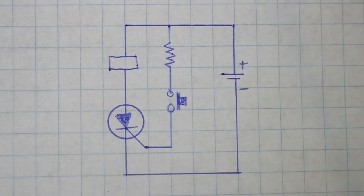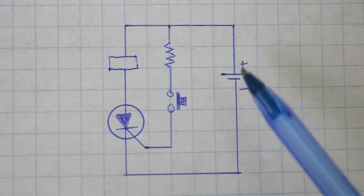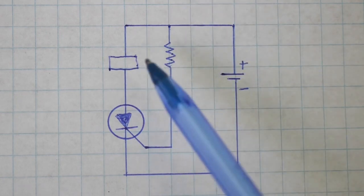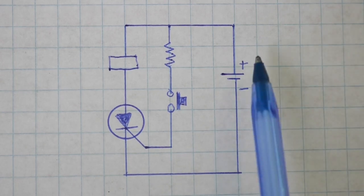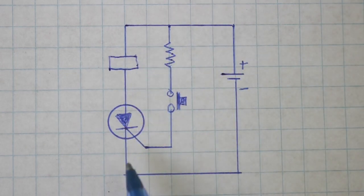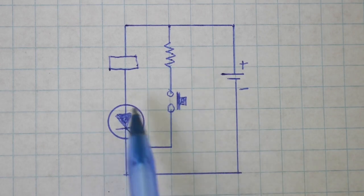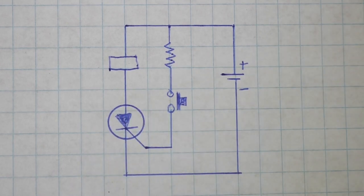So here we have a DC source and this is our load. It can be a lamp, a motor, or another device. Normally the current cannot flow through this way because the SCR or tyristor is open.